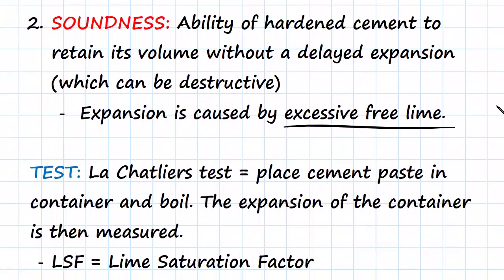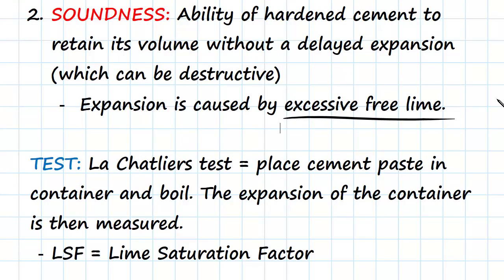The test we do for this is called Le Chatelier's test. In simplified terms, we place cement into a container and we boil it, and the expansion of this container is then measured. We have a specific container which can be in different forms, often with an internal and an external container where the internal can move. That allows the container to expand and we can then measure the change.